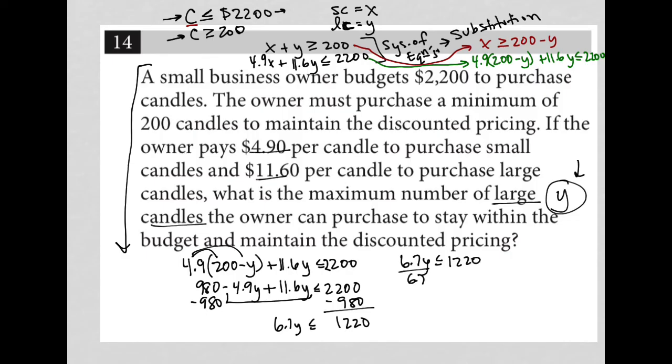Divide both sides by 6.7. Of course, this would be much faster for you because you wouldn't have to write it down. You're just putting it into your calculator. So I'd have Y is less than or equal to, let's see, 1220 divided by 6.7 is 182, basically. So that means that if Y has to be less than or equal to 182, that means that the greatest value it could be is 182. So my answer for Y, and remember Y represented the large candles, is 182.